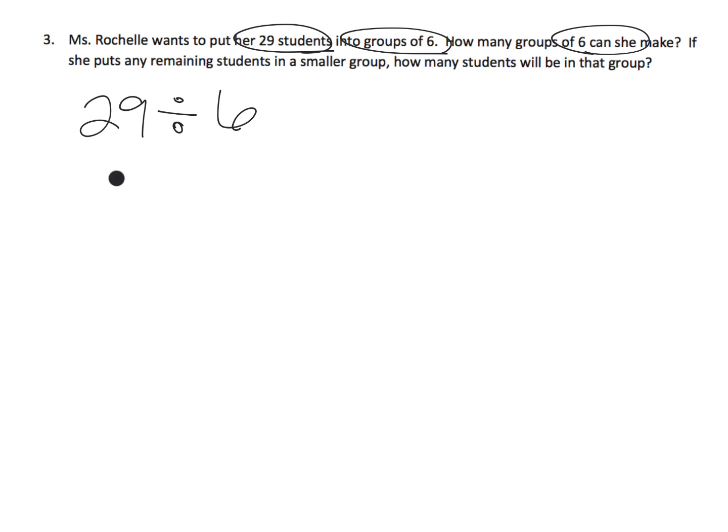So that's going to be 1, 2, 3, 4, 5, 6. That's one group. 7, 8, 9, 10, 11, 12. That's another group. 13, 14, 15, 16, 17, 18. That's another group. 19, 20, 21, 22, 23, 24. That's another group.